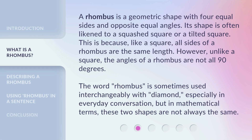A rhombus is a geometric shape with four equal sides and opposite equal angles. Its shape is often likened to a squashed square or a tilted square. This is because, like a square, all sides of a rhombus are the same length.